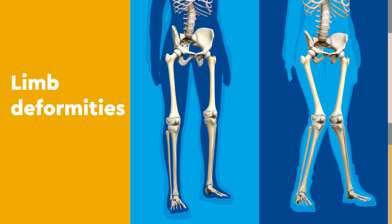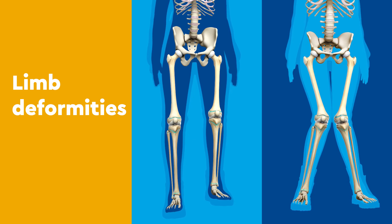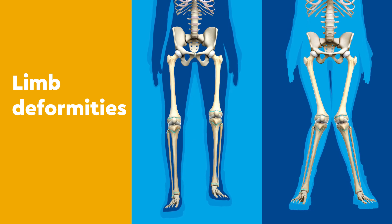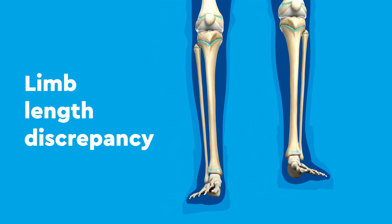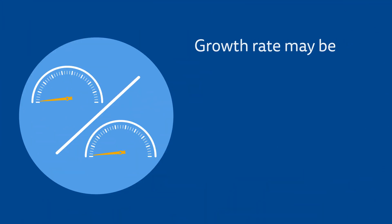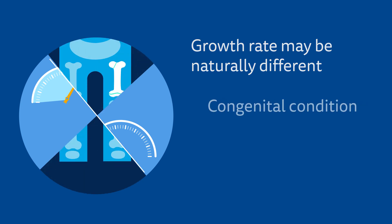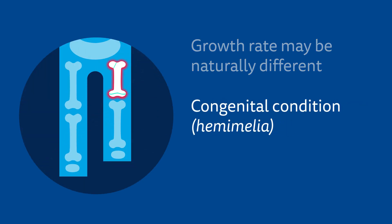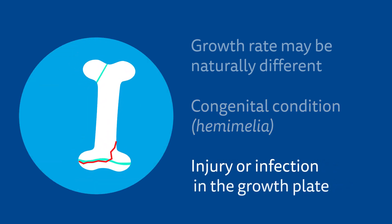Limb deformities are when one or more long bones have a different length or angle from what is typical for your age. A limb length discrepancy is a difference in length between two limbs on either side. There are many reasons a limb length discrepancy can occur: the growth rate may be naturally different on your left and right sides, a congenital condition like hemimelia where one bone in particular does not develop correctly, or as a result of injury or infection in the growth plate.